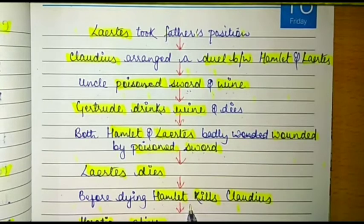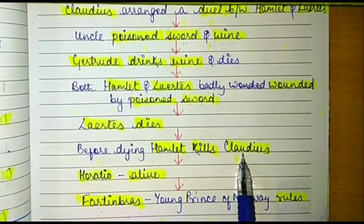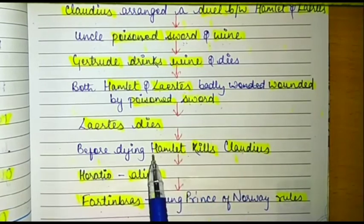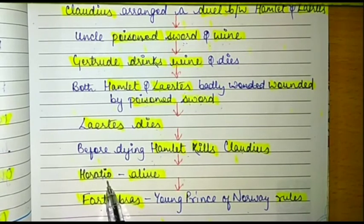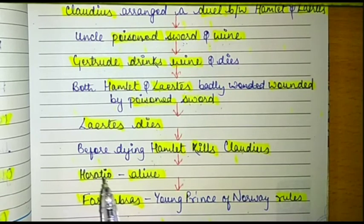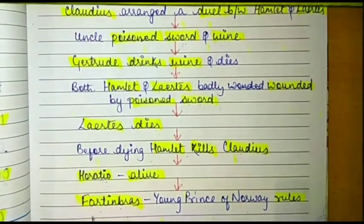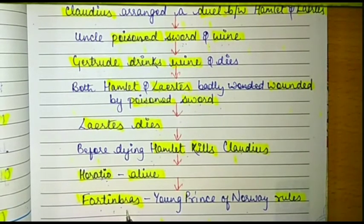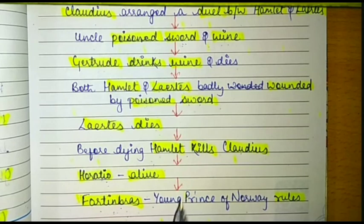Laertes dies from excessive wounds, and then Hamlet also dies — but only after fulfilling his motive, which was the death of Claudius. Now everybody dies: the king, the queen, Hamlet, and his friends. Only his best friend Horatio remains alive, purposely kept alive by the writer to inform Fortinbras about the entire incident. Since it was King Hamlet who had killed Fortinbras's father in battle, Fortinbras then rules Denmark. This was all about Hamlet.